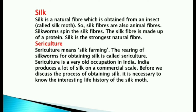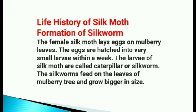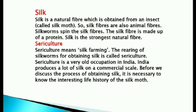Today, we are going to learn about what is silk. Silk is a natural fiber which is obtained from an insect called silk moth. So, silk fibers are also animal fibers. Silk worms spin the silk fibers. The silk fiber is made up of a protein. Silk is the strongest natural fiber.